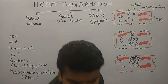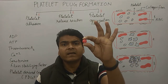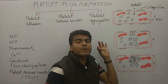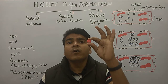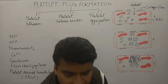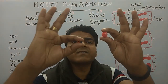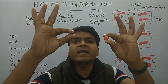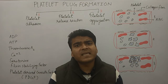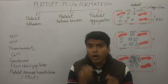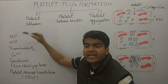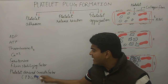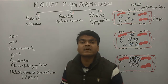Let me explain the platelet structure. Here I have drawn a platelet, and the blue color dots I have shown you are vesicles. You can see the vesicles inside the platelet. Inside these vesicles there are compounds: ADP, thromboxane A2, calcium, serotonin, fibrin stabilizing factor, and platelet-derived growth factor.